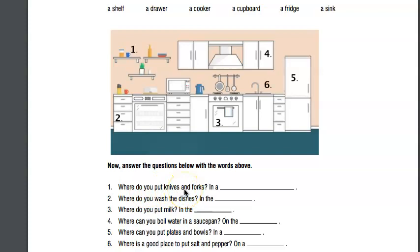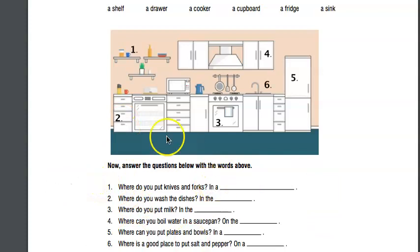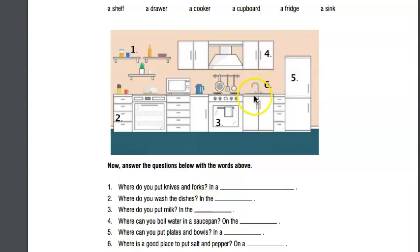Question one: where do you put knives and forks? If we look at our kitchen picture, the answer is a drawer - or plural, drawers. Where do you wash the dishes? In the sink. We can say 'in the sink' because we only have one sink in the kitchen.